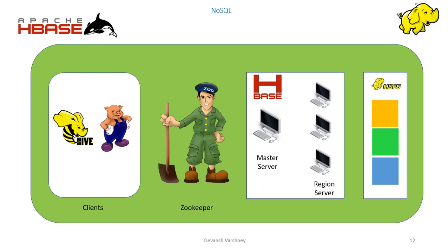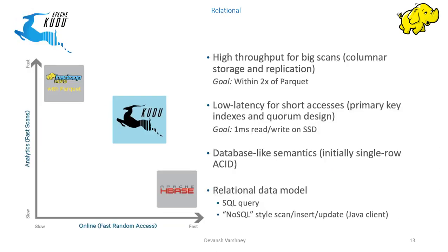Next is Apache Kudu, which is a relational database. Apache Kudu is an open source storage engine intended for structured data that supports low-latency random access together with efficient analytical access patterns. It bridges the gap between HDFS and HBase as a NoSQL database.